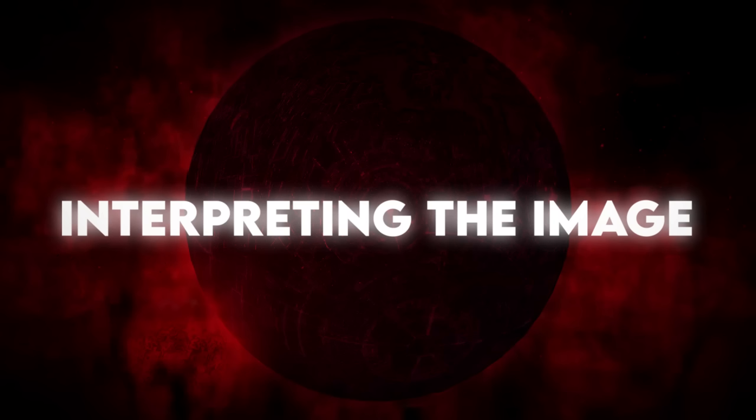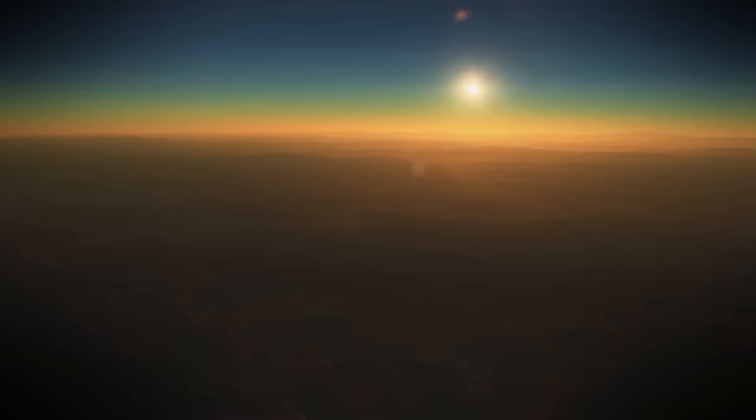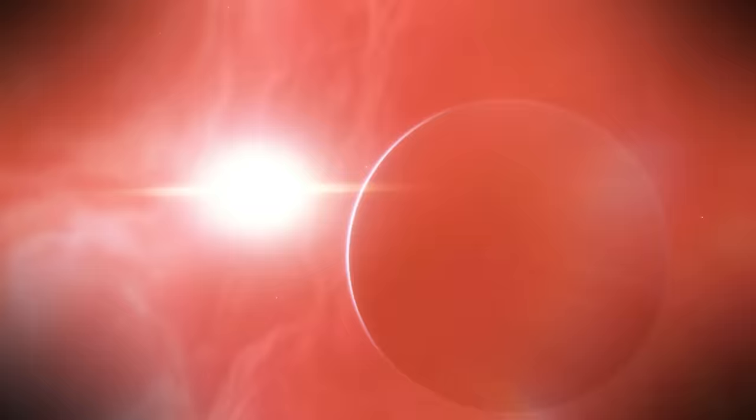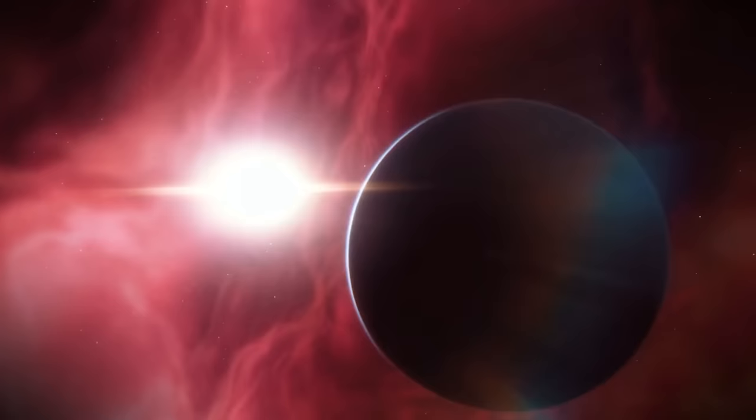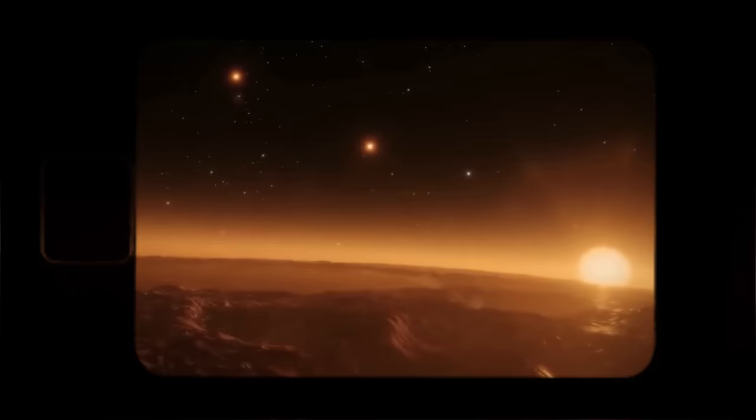Interpreting the image, the released image of Proxima b captured by the James Webb Space Telescope, JWST, is a cosmic masterpiece that beckons astronomers and space enthusiasts alike to embark on a journey of interpretation and discovery. This vivid portrayal of the distant exoplanet goes beyond mere visual spectacle. It serves as a Rosetta Stone of sorts, unlocking a wealth of information about Proxima b's surface, atmosphere, and potential habitability.